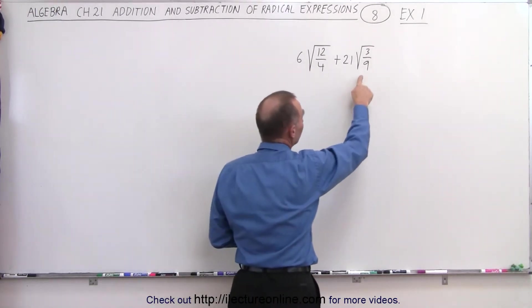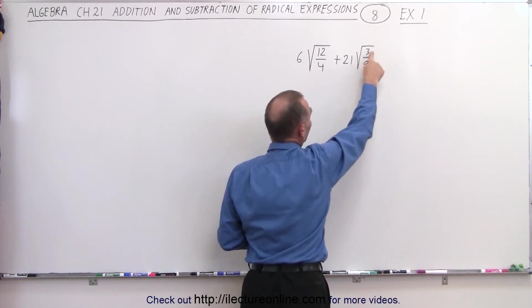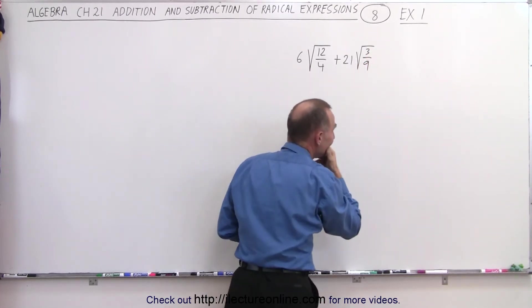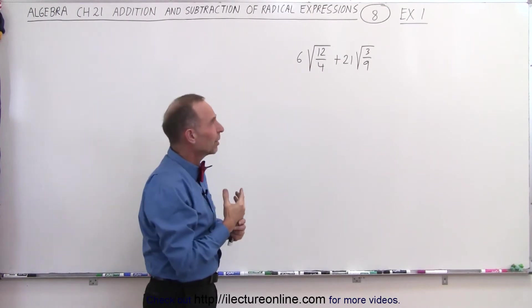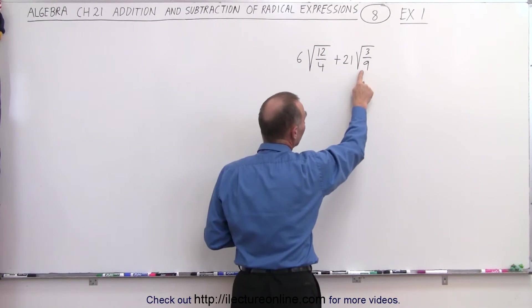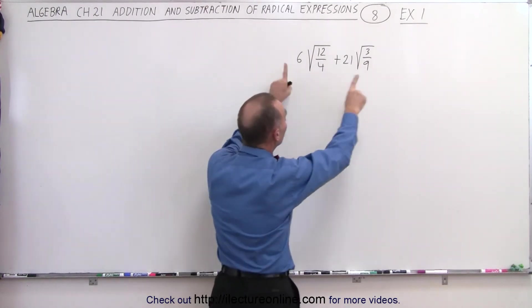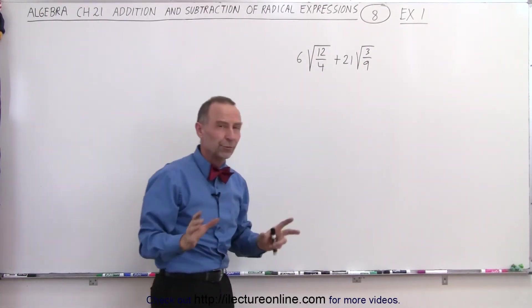Over here, notice that if I divide 3 and 9 by 3, I get 1 over the square root of 3. Well, I don't want the square root of 3 in the denominator. However, if I simply take the square root of 9, which gives me 3, then I end up with just the square root of 3 in the numerator, and then both terms will have the square root of 3.